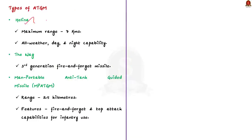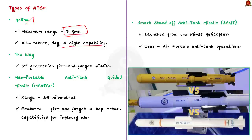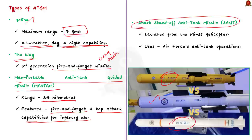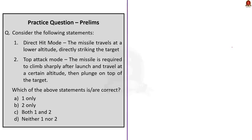Now let us see some important DRDO anti-tank guided missiles. First is Helina, with a maximum range of 7 kilometres, designed and developed for integration on the weaponised version of the Advanced Light Helicopter. It has all-weather day and night capability and can defeat battle tanks with conventional armour or explosive reactive armour. Second is NAG — a third generation fire-and-forget missile developed for mechanised formations to engage heavily fortified enemy tanks. Then MPAT-GM — man-portable anti-tank guided missile — with a range of 2.5 kilometres, with fire-and-forget and top-attack capabilities for infantry use. Finally, SANT — Smart Anti-Tank missile — being developed for launch from the MI-35 helicopter for air force anti-tank operations.